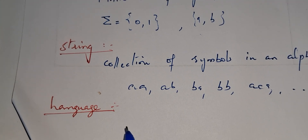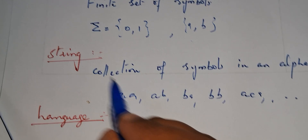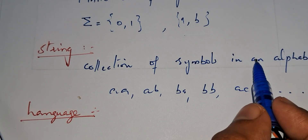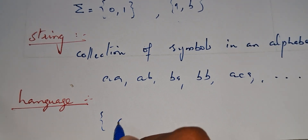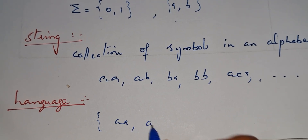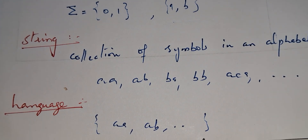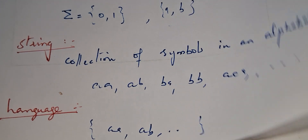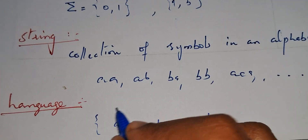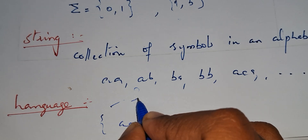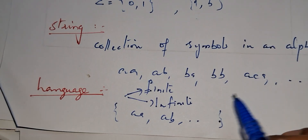Then what is a language? Language means a group of strings. So a group of strings such as {AA, AB, etc.} is a language. Languages are of two types: one is finite language, another is infinite language.